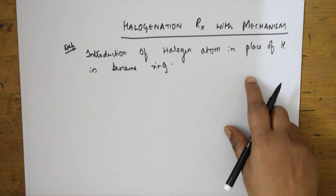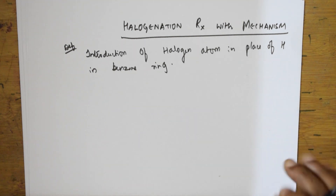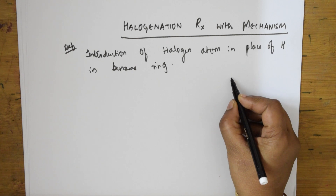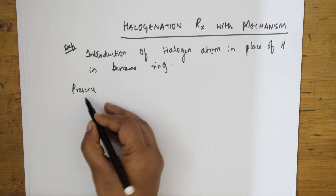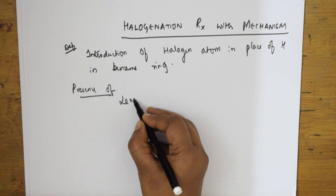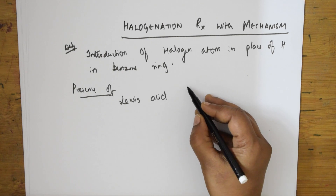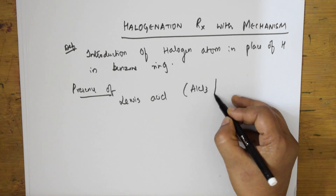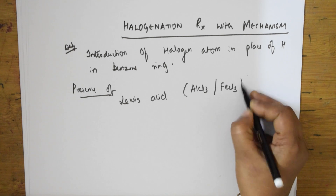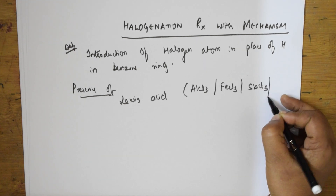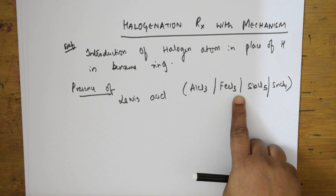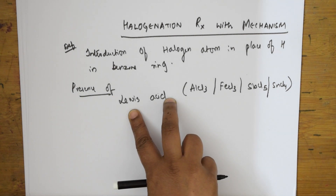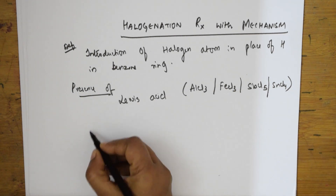When performing a halogenation reaction, the most important requirement is the presence of a Lewis acid. Lewis acids include aluminium chloride (AlCl3), FeCl3, SbCl5, or SnCl4 — any of these can be used. The role of the Lewis acid is that it reacts with the halogen and generates a halonium ion.